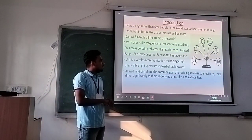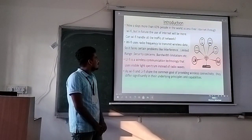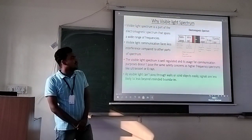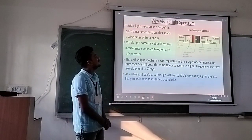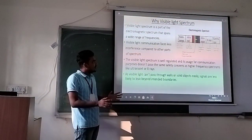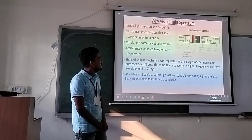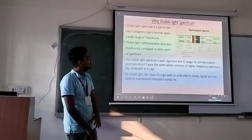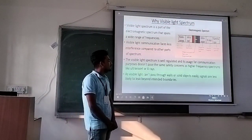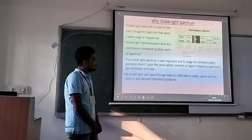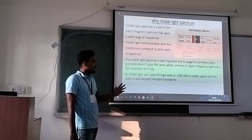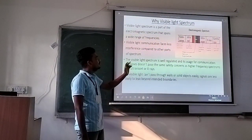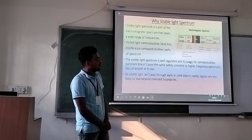As we have a wide range of electromagnetic spectrum, why do we use only the visual light spectrum for LiFi? The visual light spectrum is a part of the electromagnetic spectrum and provides less interference compared to other parts. Visual light is well-regulated and suitable for communication purposes, unlike higher frequency spectrums like ultraviolet or X-ray. Also, since visible light cannot pass through walls or solid objects, signals are less likely to leak beyond intended boundaries. This is why we use the visual light spectrum over other parts of the electromagnetic spectrum.